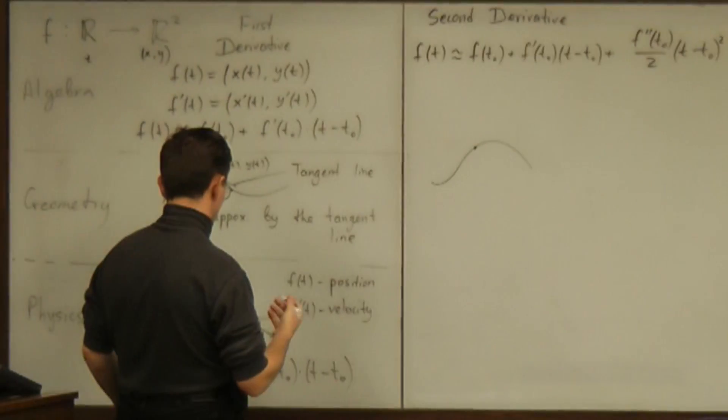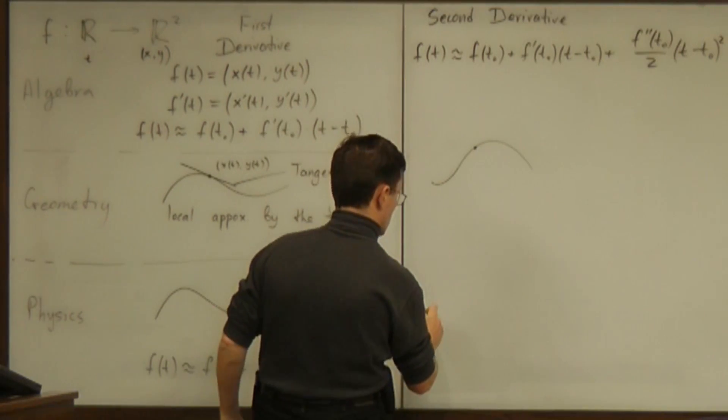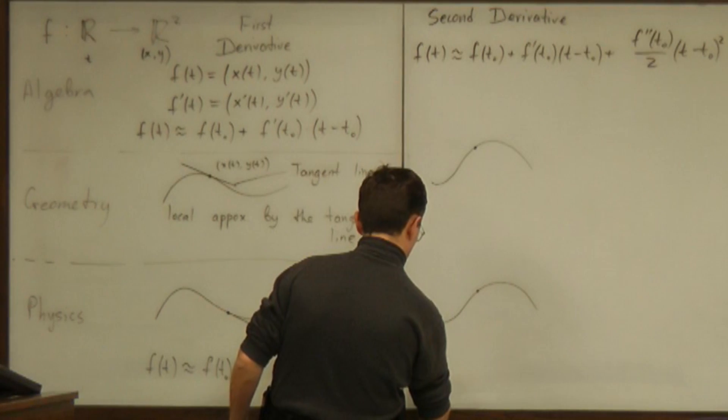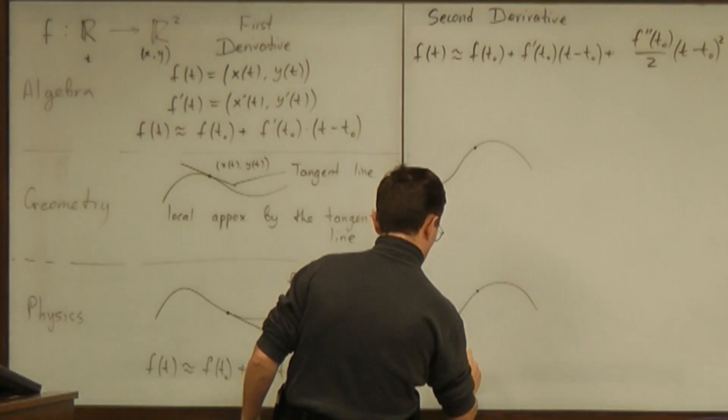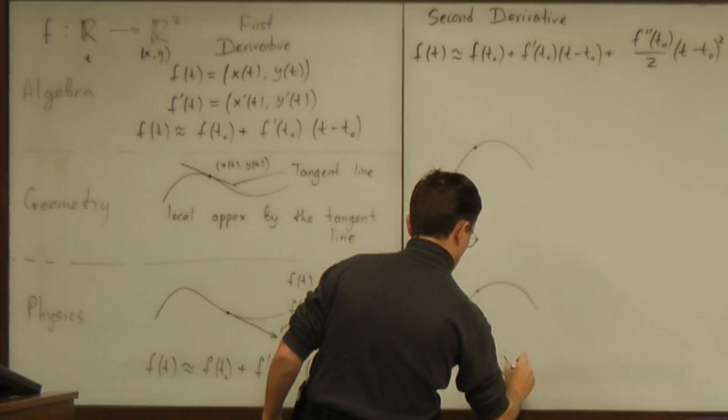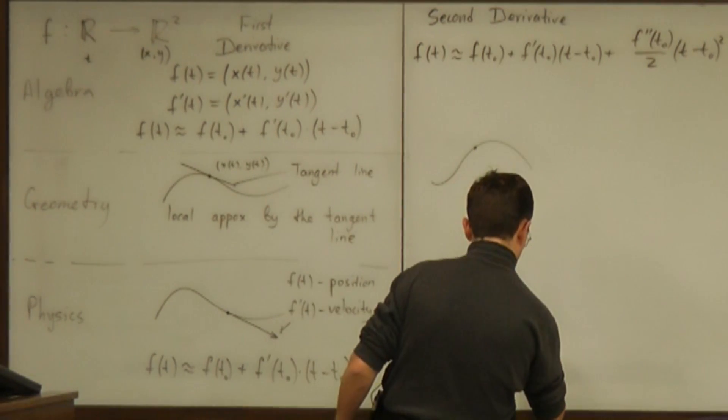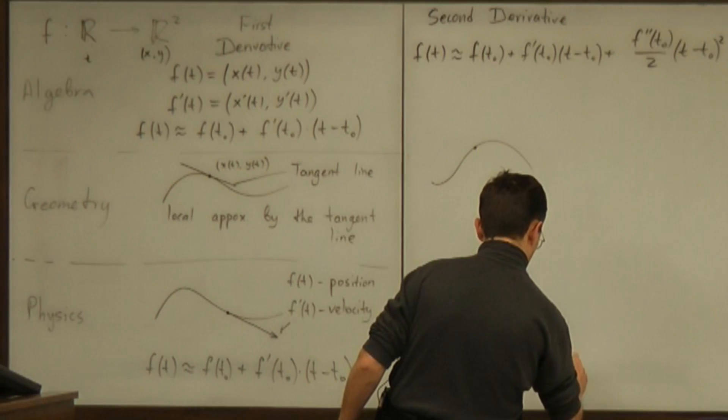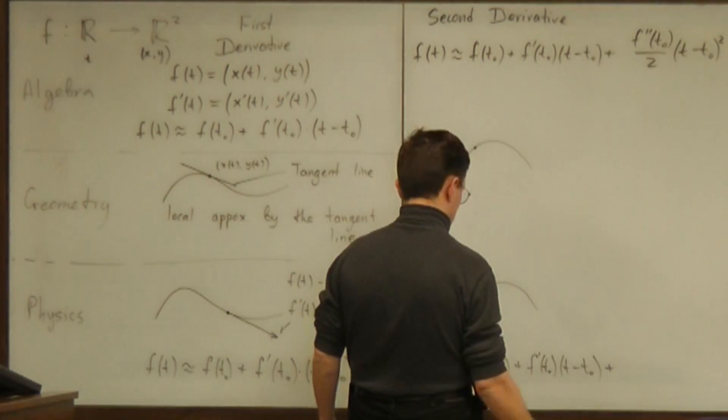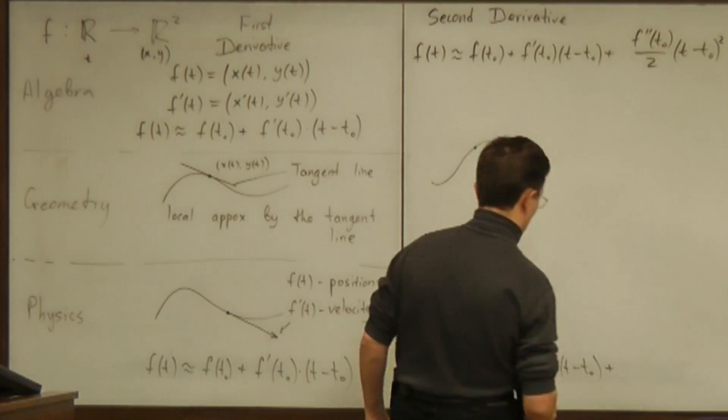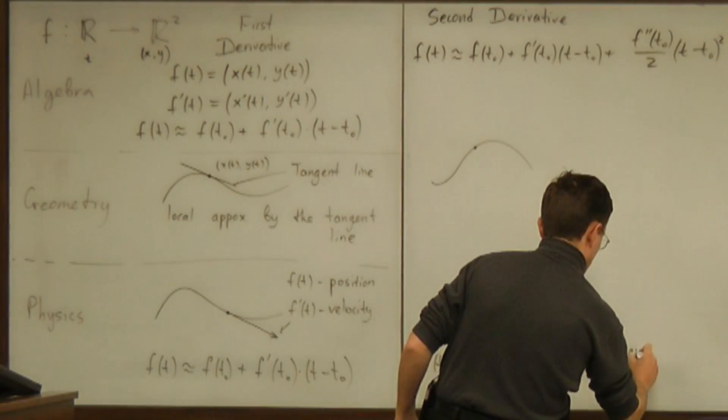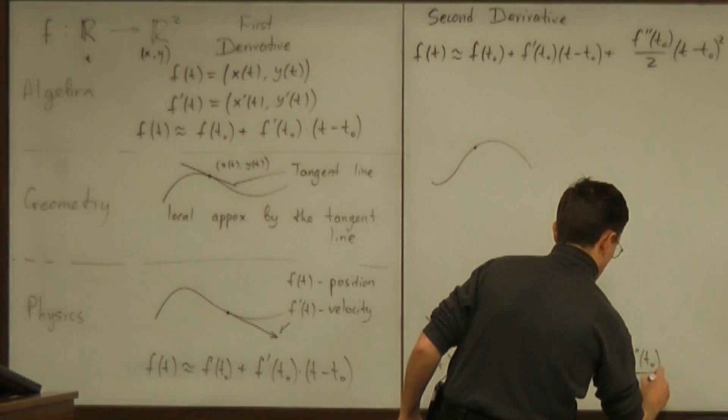From physics point of view, we have arbitrary motion of a particle. And then we say that arbitrary motion can be approximated by this linear motion first. Plus what? Of course, Taylor approximation says that it should be that term.